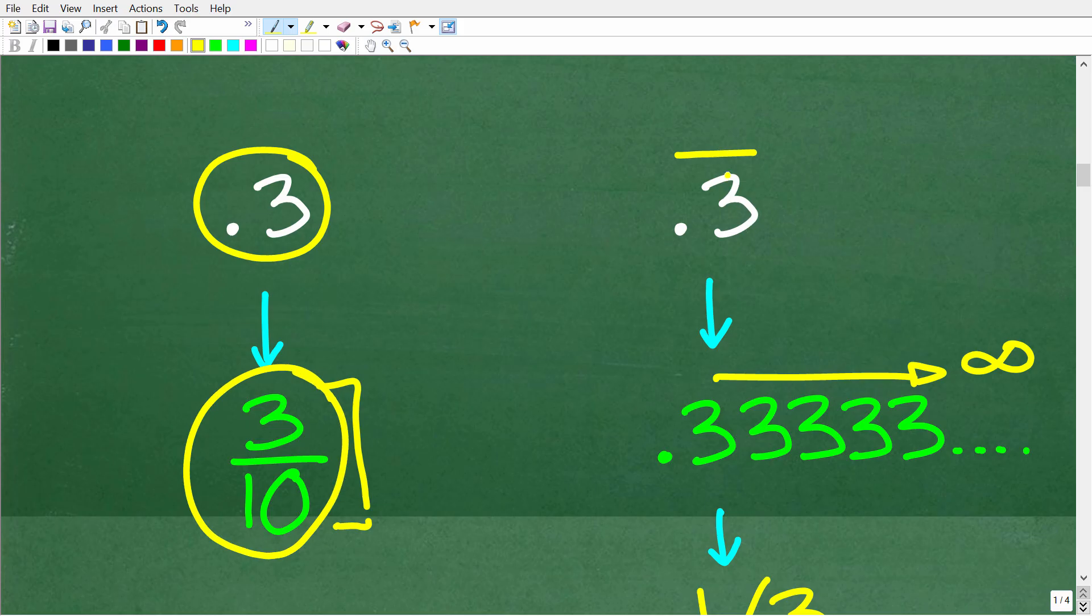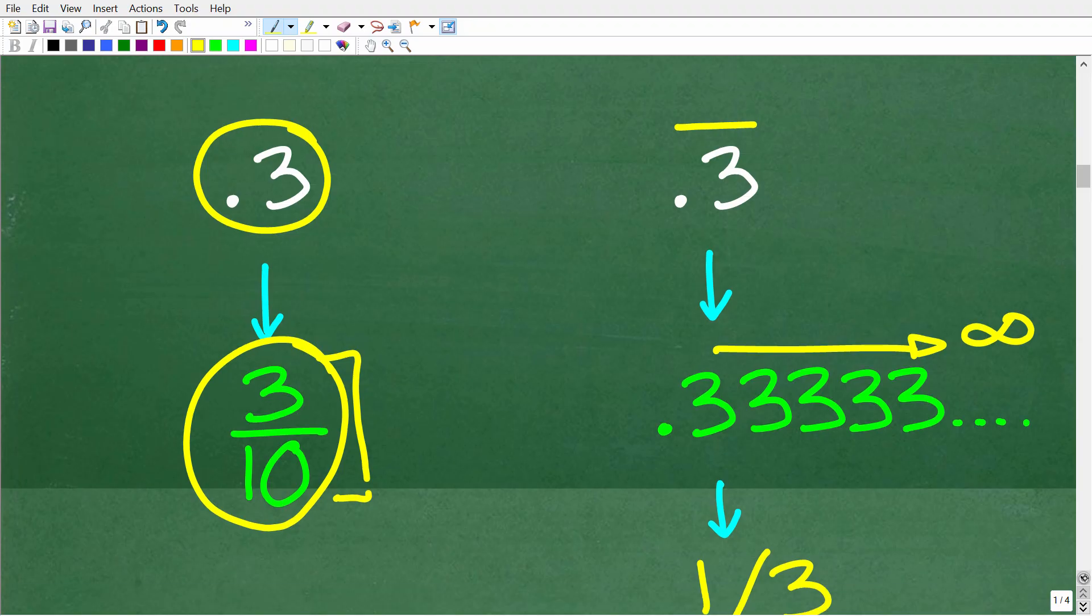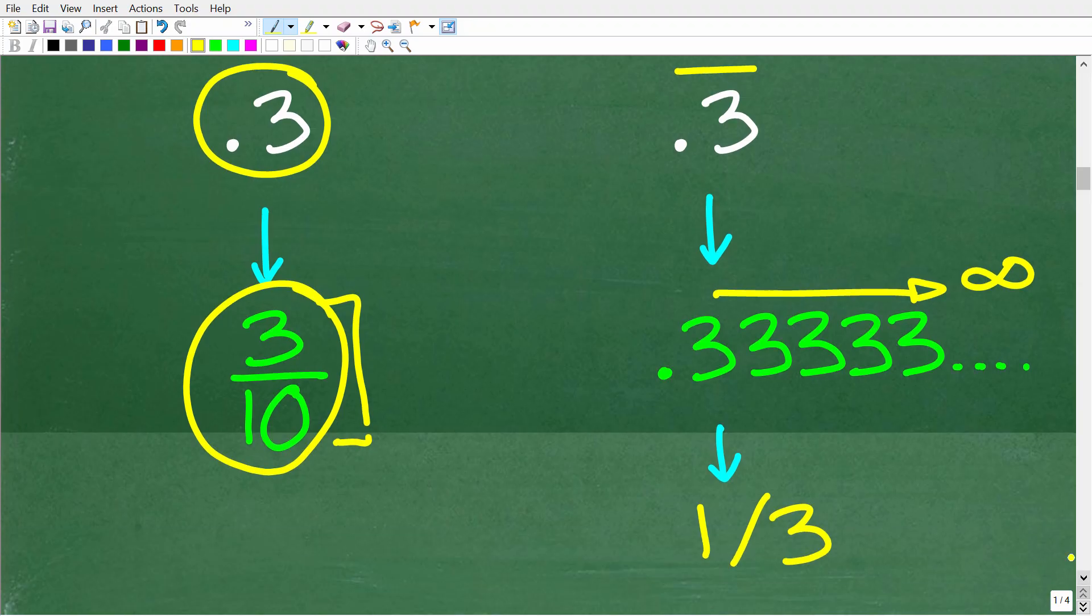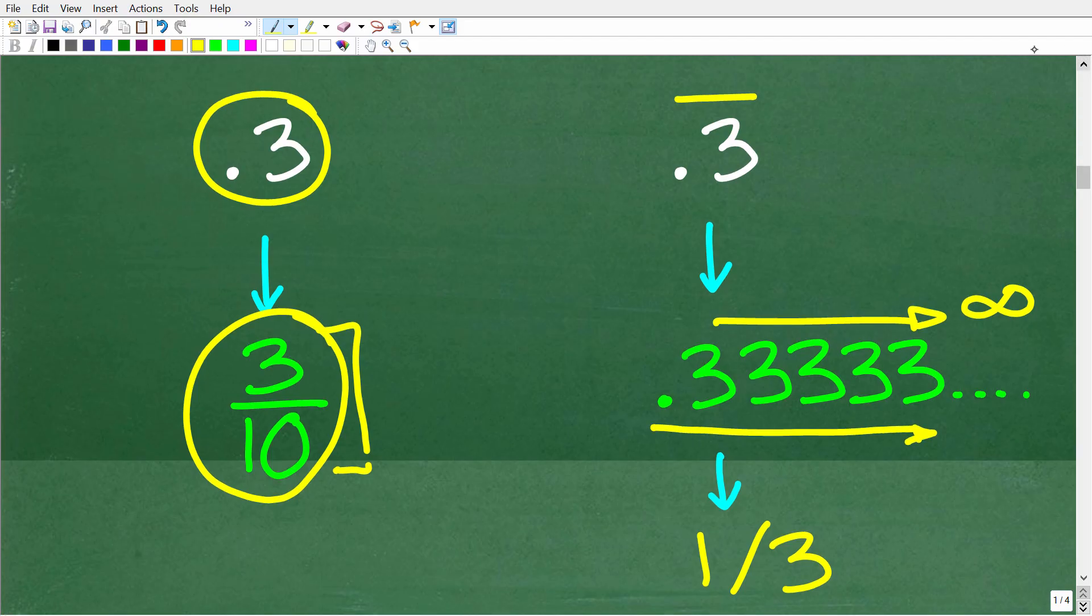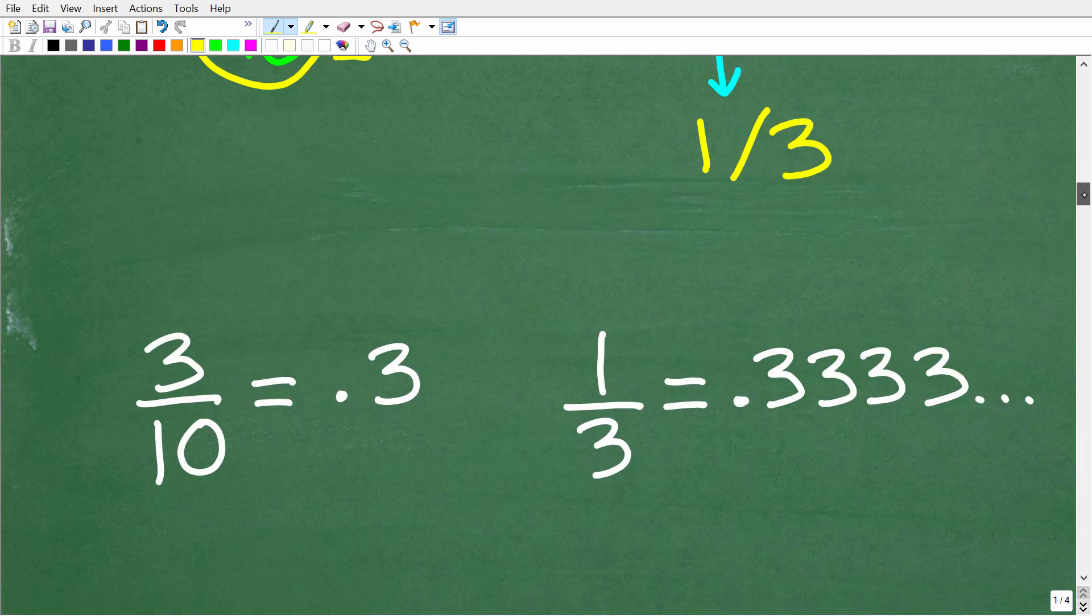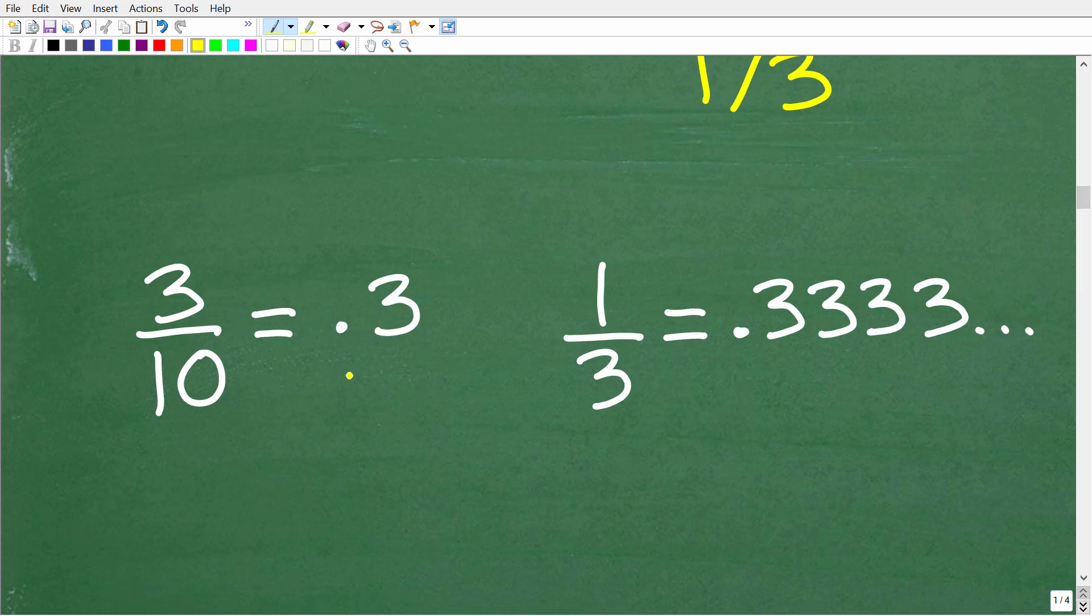Again, 0.3 is equivalent to the fraction 3 tenths. But 0.3 repeating also has a fraction equivalent and that is one third. So if you have your calculator handy and you take 1 and divide it by 3, you're not going to get 0.3. You will get 0.3 repeating. Okay, so this is really important, this repeating bar, because if you can't interpret what this means, you can't solve this equation. So what we have here, again, is not 3 tenths. We have one third.